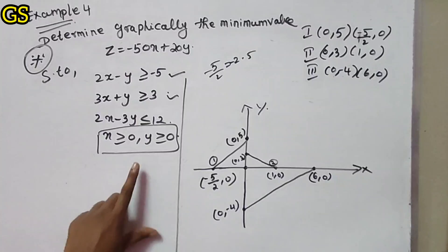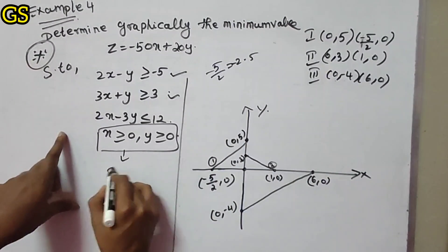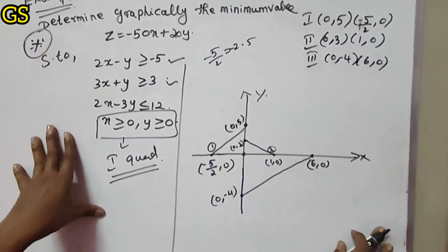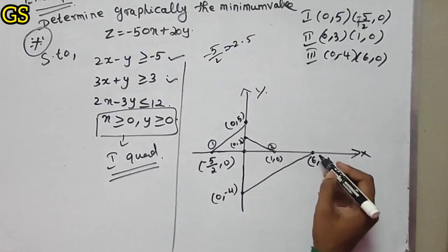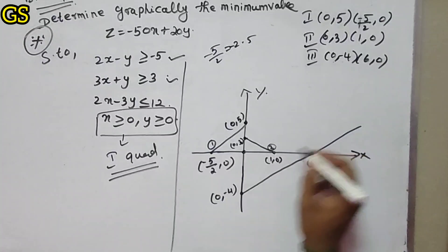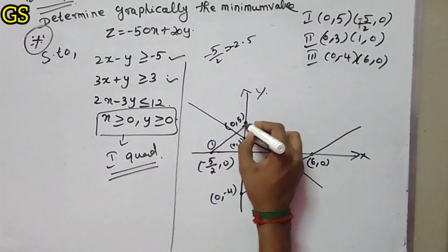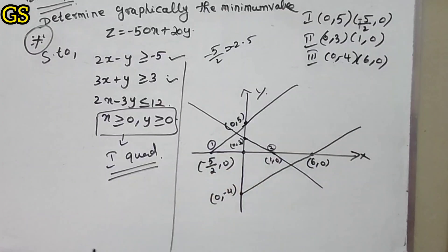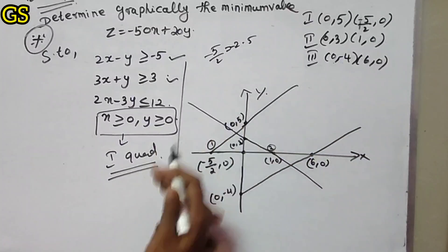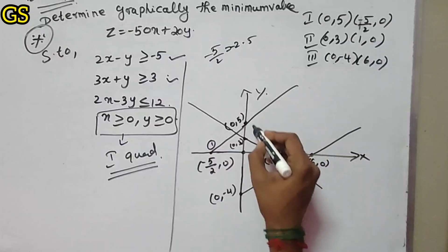The feasible region is in the first quadrant. The region in the first quadrant is bounded by these constraint lines. You can understand the region by looking at where the lines intersect. The region will be identified within the first quadrant boundaries.